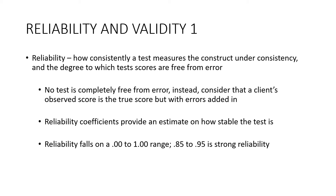Reliability coefficients provide an estimate of how stable a test is, rated from 0.00 to 1.00. When reliability falls between 0.85 and 0.95, the test is considered pretty reliable and consistent. If it's at 0.3, the reliability is poor and you'd hesitate to use those results. You'll rarely see a perfect 1.00, but scores in the 0.85–0.95 range indicate the test is dependable.